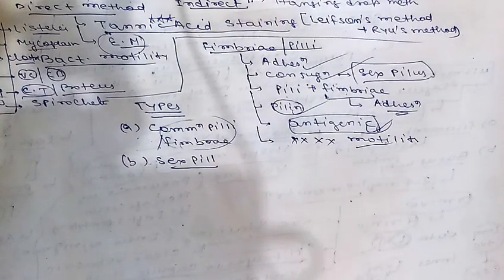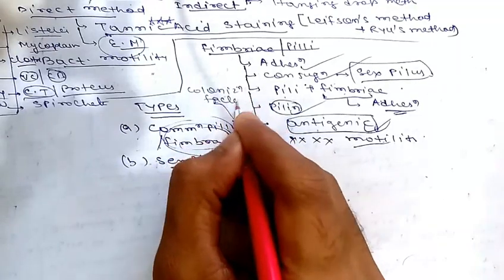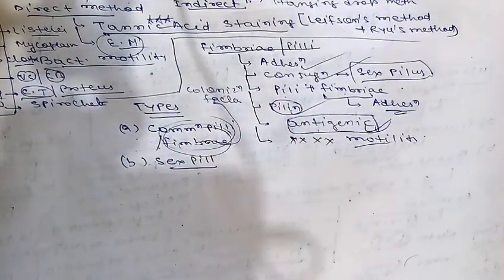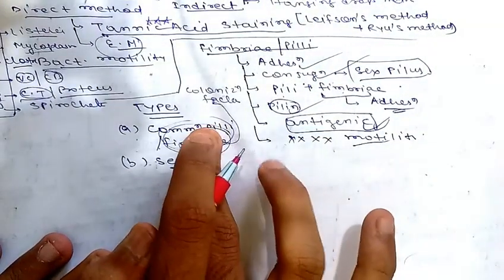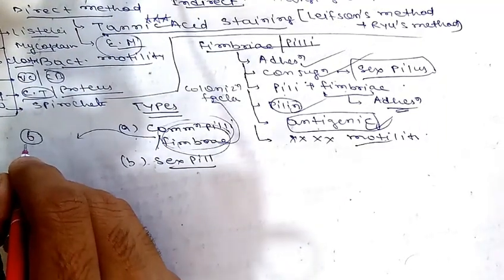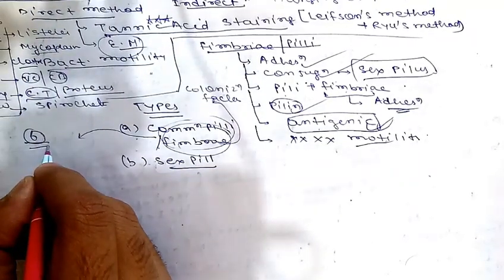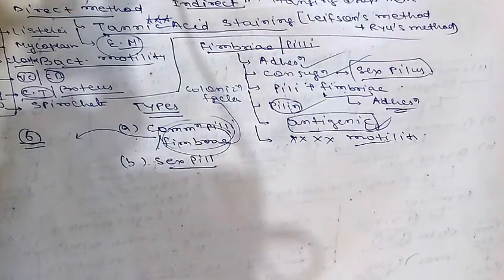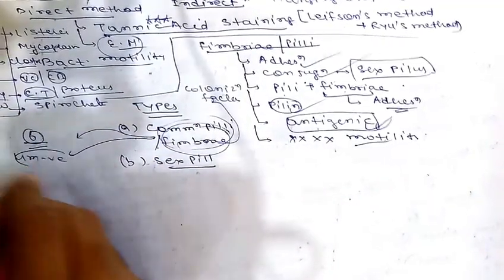Fimbriae are also called colonization factors because they help in colonization, cause hemagglutination by attaching to red blood cells, and attach to surfaces of certain fungal cells. There are six types of common pili classified based on morphology, number per cell, adhesive properties, and antigenic nature.